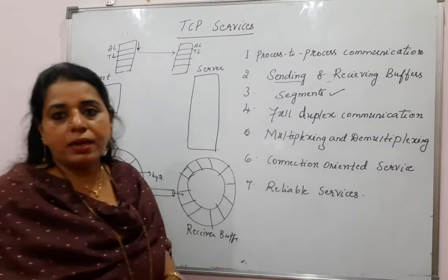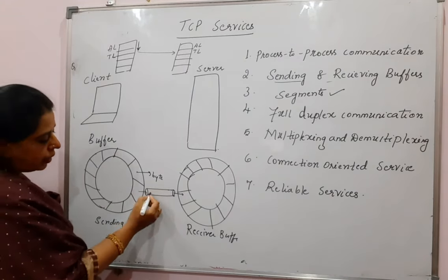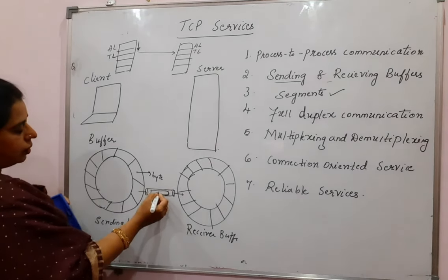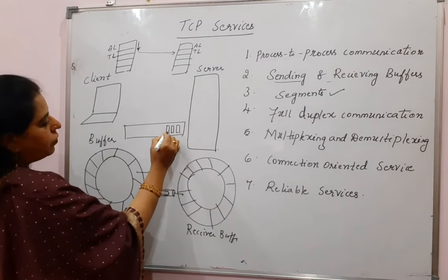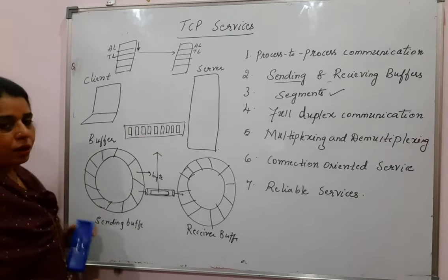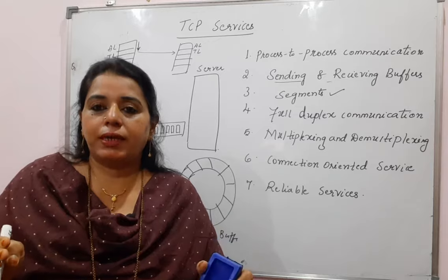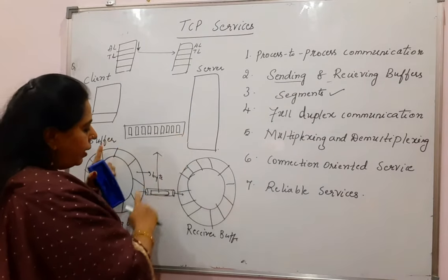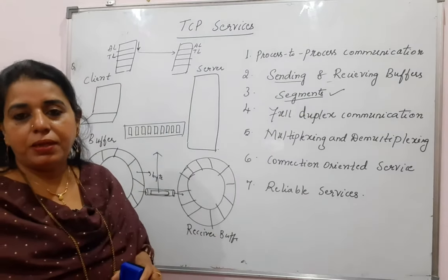There is one more concept in Transmission Control Protocol: it is called a segment. Once these bytes are saved, they travel in the form of a segment. A segment consists of different bytes. Whatever bytes are received from the application layer program, the transport layer will put certain bytes into one segment. For example, a segment may have 1000 bytes — all those 1000 bytes are included in one segment and sent towards the receiver. The data is transferred in the form of segments in Transmission Control Protocol.